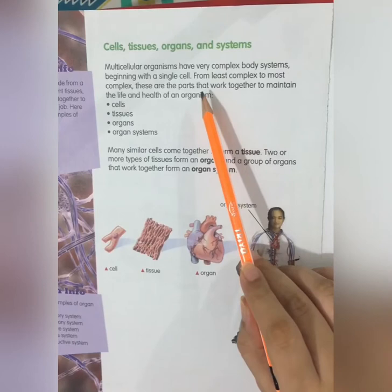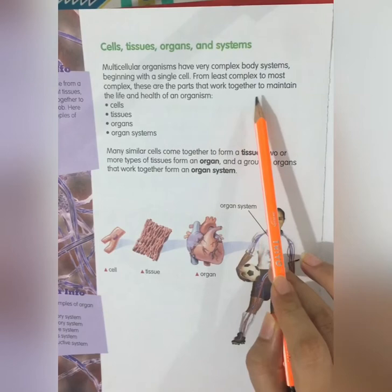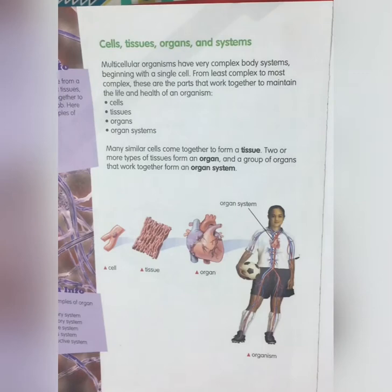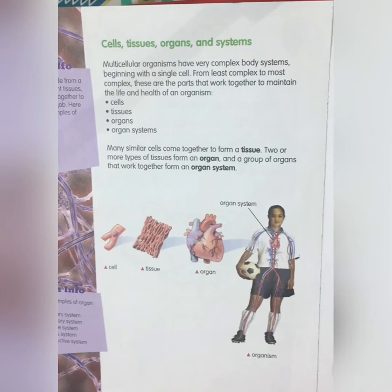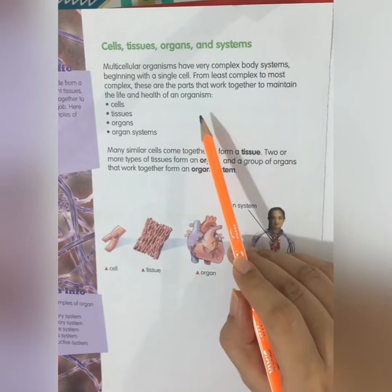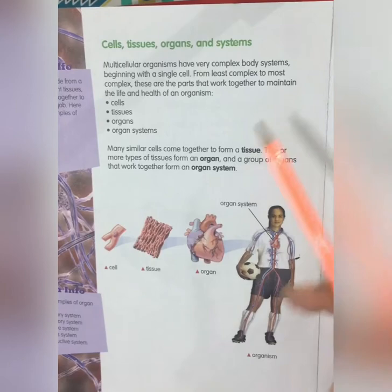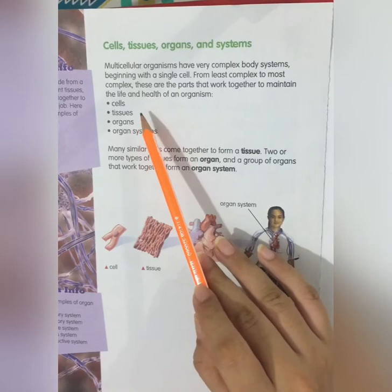As your book says, from least complex to most complex, these are the parts that work together to maintain the life and health of an organism. We are now going to discuss further about cells and the health of an organism.